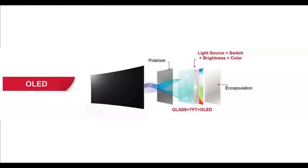Next comes OLED, which we're very familiar with — available in some TVs, monitors, smartwatches, and smartphones. OLED stands for Organic LED and uses OLED pixels to provide colors. The best part is that those pixels produce their own light without needing a backlight, and they can turn off completely to create the best blacks.